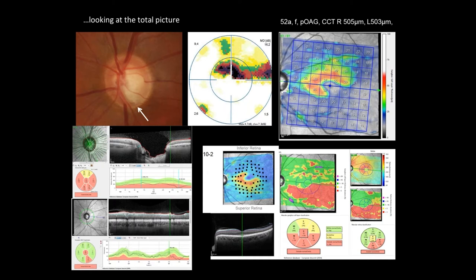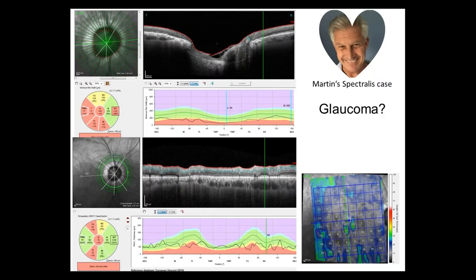If we want to correlate our thickness findings with the visual field, we can use the Hood report, which shows our ganglion cell map upside down. We can nicely correlate ganglion cell loss with visual field loss in the upper field as shown in white-on-white perimetry with the Octopus device. This is a typical picture of glaucomatous atrophy — not beginning, but already in the middle of the disease.